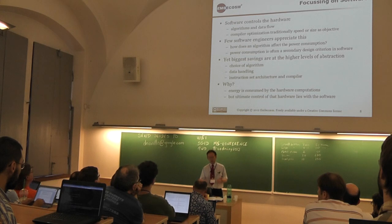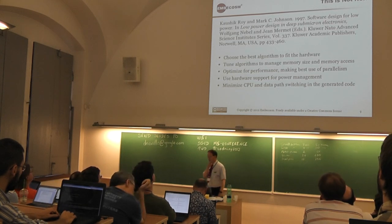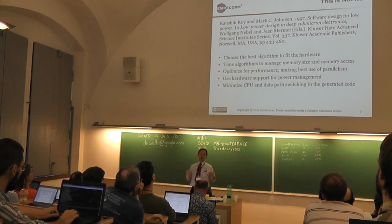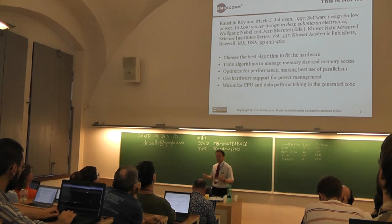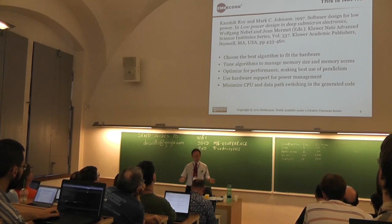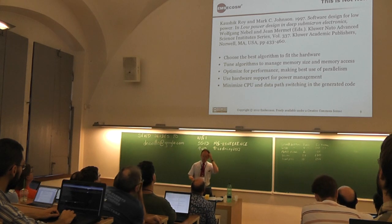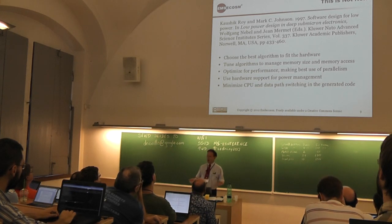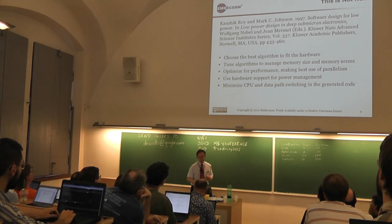Ultimately, energy is consumed by the hardware but the hardware is controlled by the software. This is an area people have been talking about for a long time — here's a paper from 15 years ago describing steps to make software more efficient: choosing the algorithm to fit the hardware, tuning algorithms to memory access, optimizing for performance using parallelism, and using hardware support. Obviously software engineers still don't do this. And the potential is for the compiler to help here, which is where we're starting to get interested.